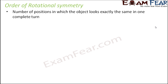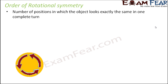When we say one complete turn, that means 360 degrees. So you rotate an object through different angles until it reaches 360 degrees, and in that entire journey, look for the number of positions where the object looks the same. Let us take this example — here you have three arrows inside a circle. Let us mark a point A just for our reference. Now let us rotate this entire shape in the clockwise direction by 120 degrees.